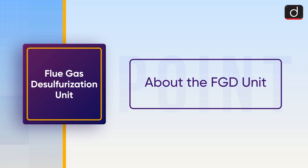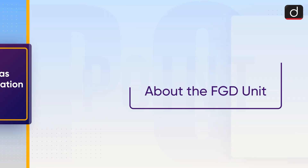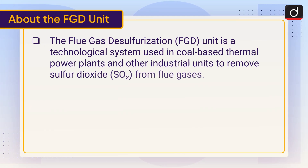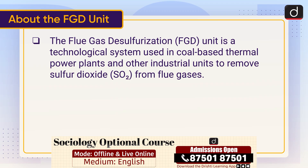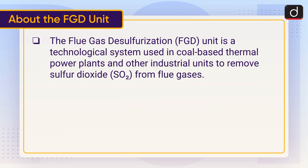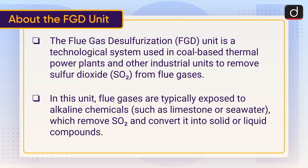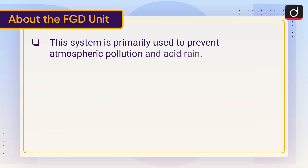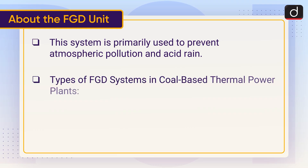The Flue Gas Desulfurization (FGD) unit is a technological system used in coal-based thermal power plants and other industrial units to remove sulfur dioxide (SO2) from flue gases. In this unit, flue gases are typically exposed to alkaline chemicals such as limestone or seawater, which remove SO2 and convert it into solid or liquid compounds. This system is primarily used to prevent atmospheric pollution and acid rain.